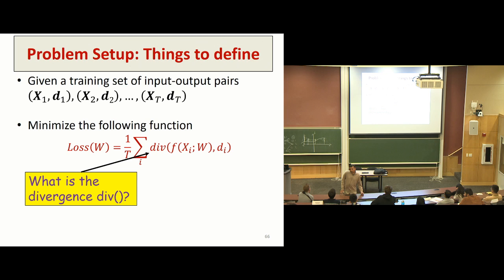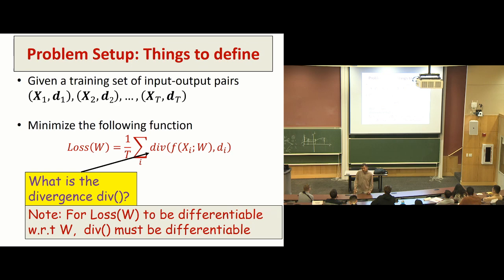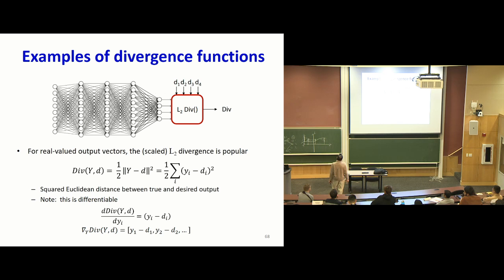Now here's the last bit: the divergence function itself. For our loss to be differentiable, the divergence must be differentiable — you want to know what a small change in a weight does to the overall loss, and if you can't compute it you can't use gradient descent. The most common one is the L2 divergence — the squared error — which is half the sum of (y_i minus d)^2. Why the half? It's just a scaling factor; it becomes convenient when you take a derivative: the derivative with respect to any y_i is simply y_i minus d_i, which is basically the error.